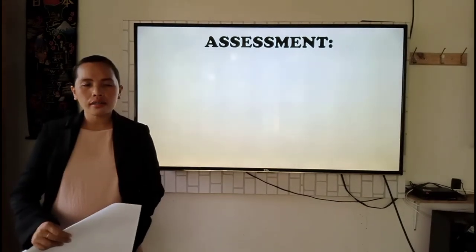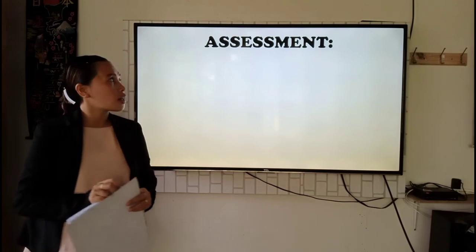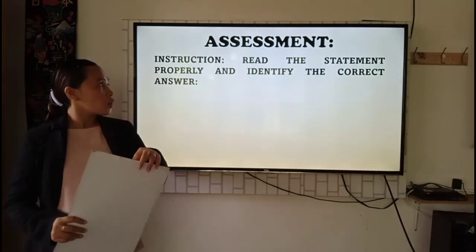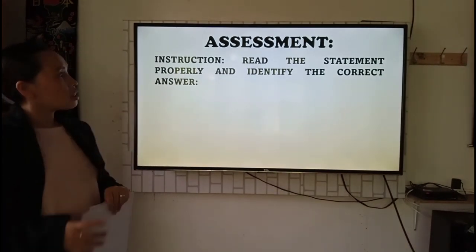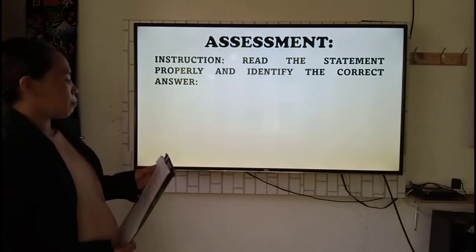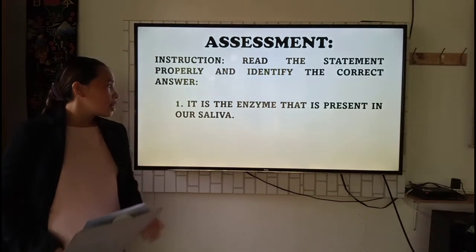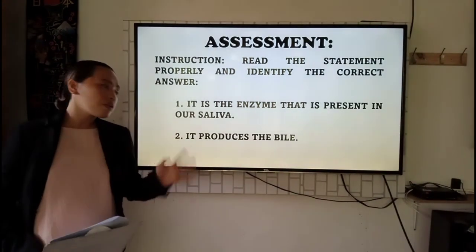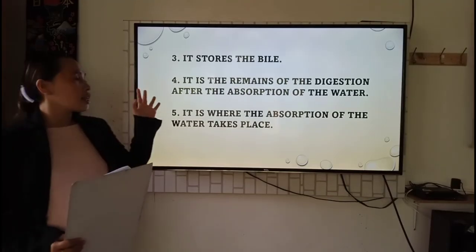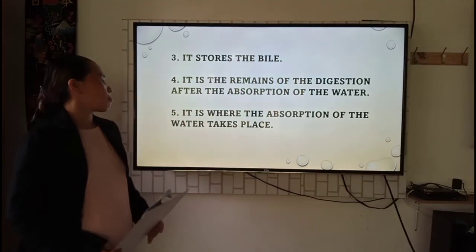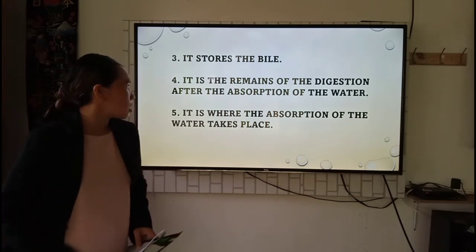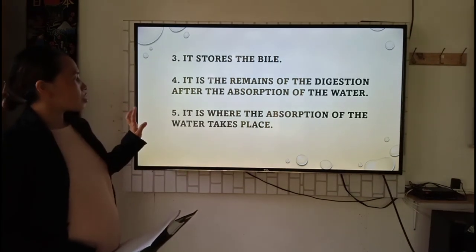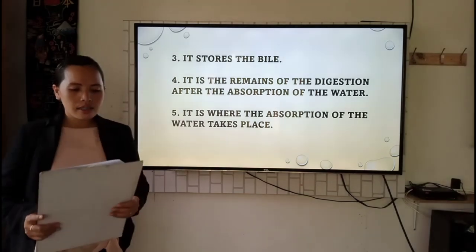Any questions so far? If none, let us proceed to your assessment. Get one part sheet of paper to answer the questions. Read the statement properly and identify the correct answer. Number one: it is the enzyme that is present in our saliva. Number two: it produces the bile. Number three: it stores the bile. Number four: it is the remains of digestion after the absorption of water. Number five: it is where the absorption of water takes place.